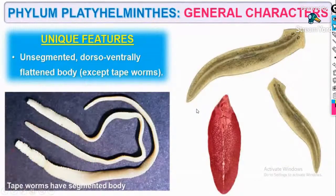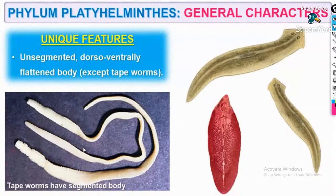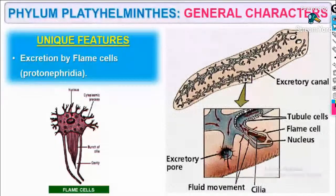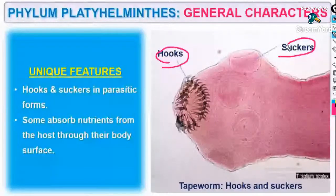They are unsegmented with a dorsoventrally flattened body, except in the case of tapeworms where the body is round. Excretion is done by flame cells — that is, by means of protonephridia. Hooks and suckers are present in the case of Platyhelminthes. Some of them absorb nutrients from the host through their body surface.